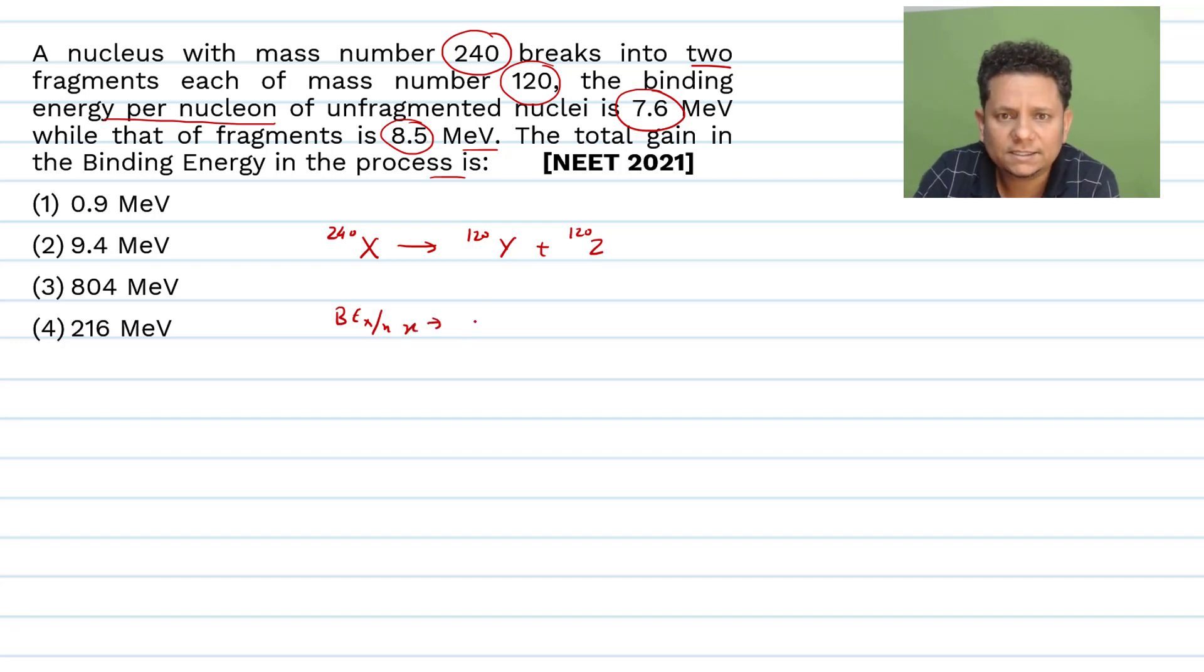The binding energy per nucleon for X is 7.6, binding energy per nucleon for Y is 8.5, and binding energy per nucleon for Z is 8.5 mega electron volt.